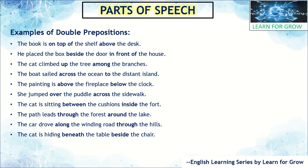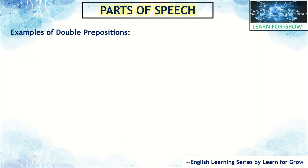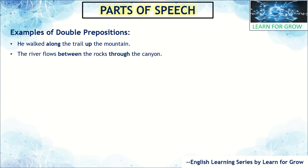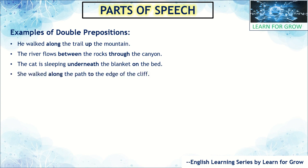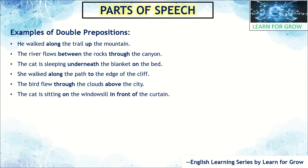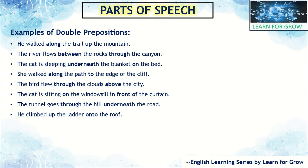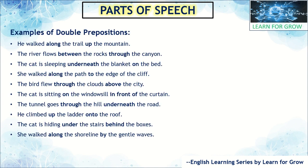Additional double preposition examples: 'The book is on top of the shelf above the desk,' 'He placed the box beside the door in front of the house,' 'The cat climbed up the tree among the branches,' 'The boat sailed across the ocean to the distant island,' 'The painting is above the fireplace below the clock,' 'She jumped over the puddle across the sidewalk,' 'The path leads through the forest around the lake,' 'The cat is hiding beneath the table beside the chair,' 'She walked along the path to the edge of the cliff,' 'The bird flew through the clouds above the city.'